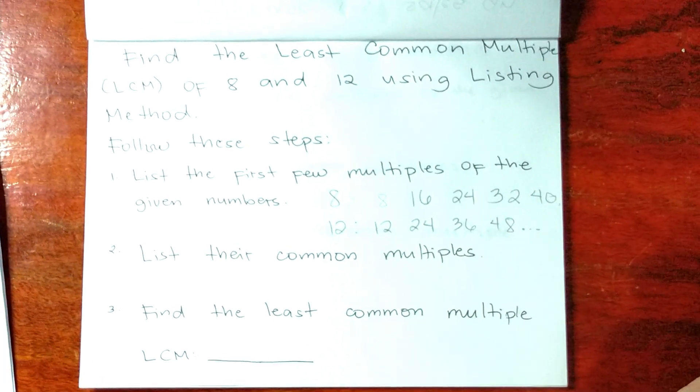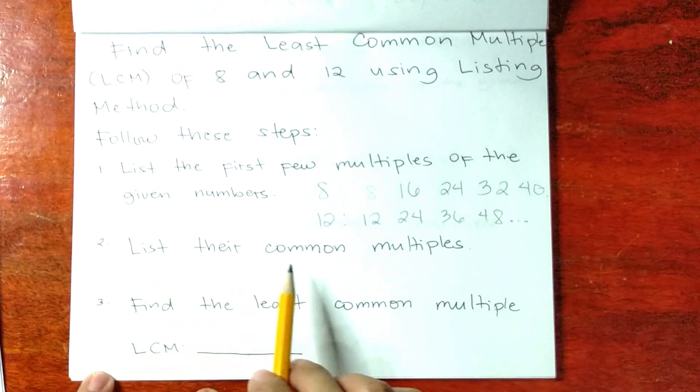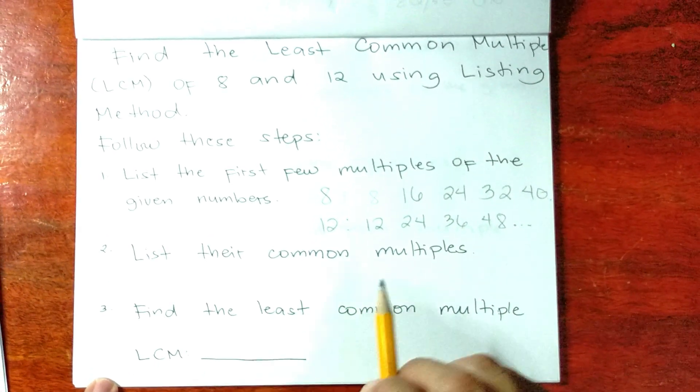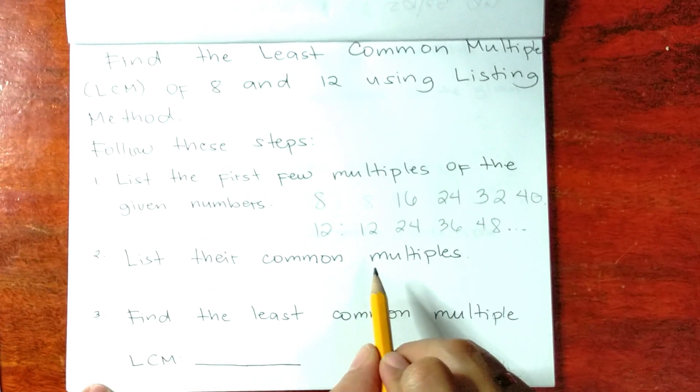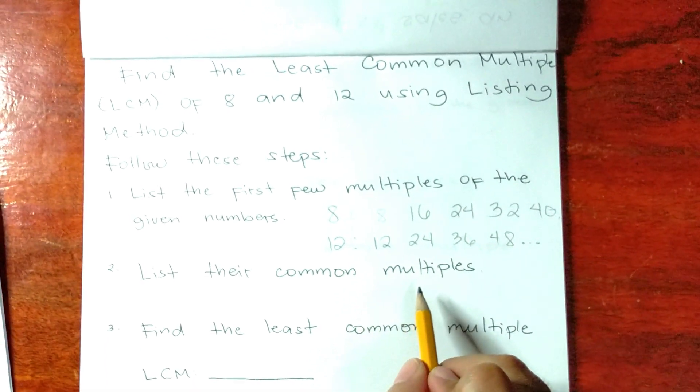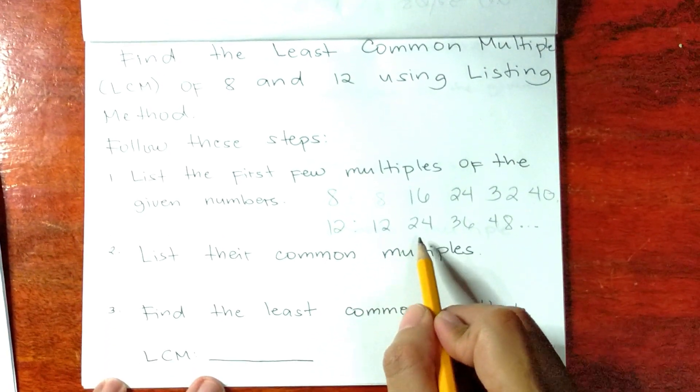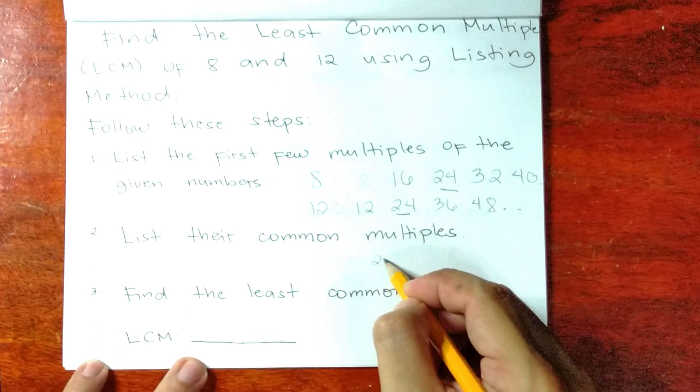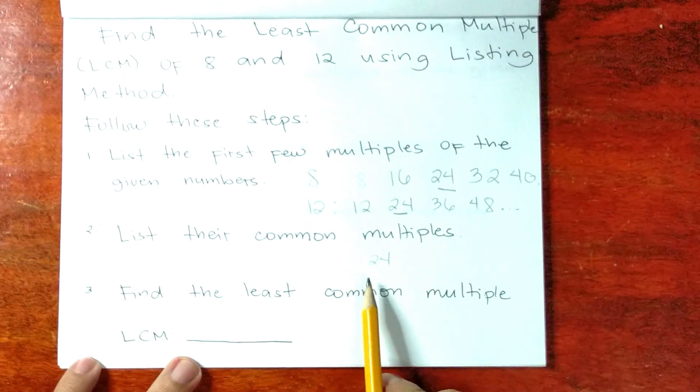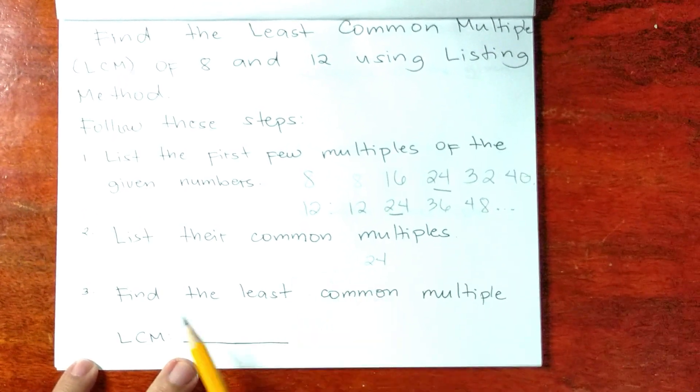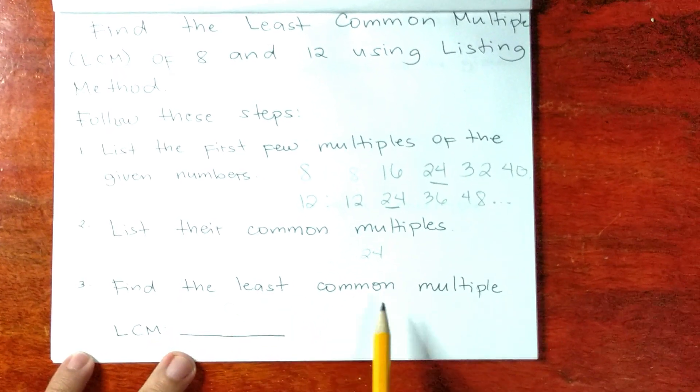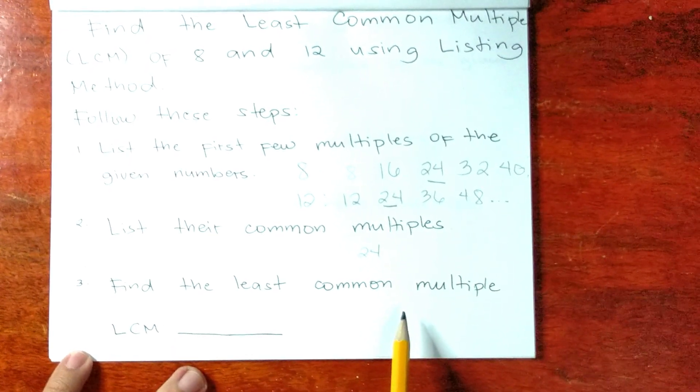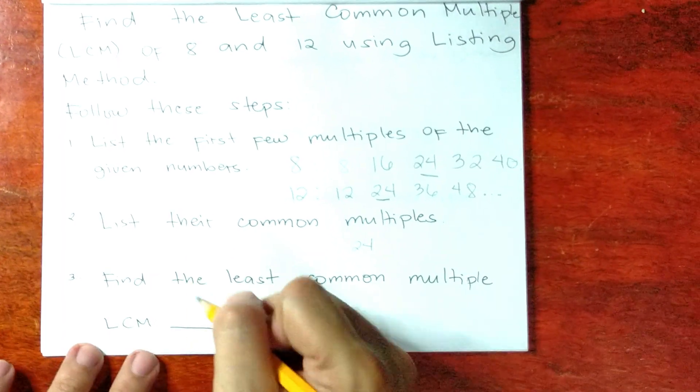Next step, number 2: List their common multiples. Common multiples of 8 and 12 is 24. Since there is only one common multiple, to get the least common multiple or LCM, the LCM of 8 and 12 is 24.